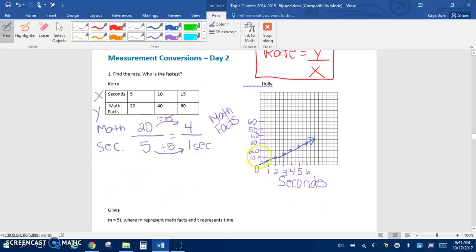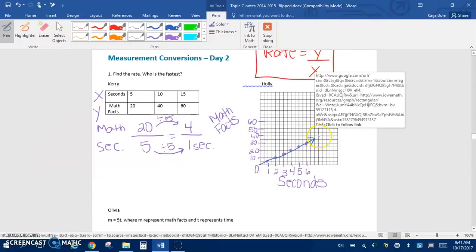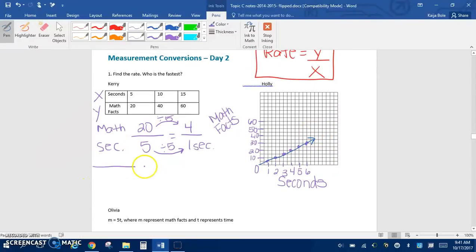Alright, so now if we look at Holly on the graph here, I'm going to do Holly in blue. So we're still comparing math and we are comparing seconds. So in the first part, if we look at that first point, it already tells us how much she can do in 1 second. If we look at the graph, that first point is that 1 and then 5 math facts. So she can do 5 math facts in 1 second.